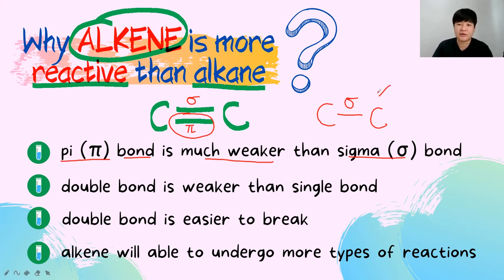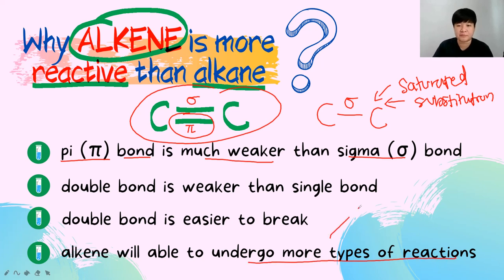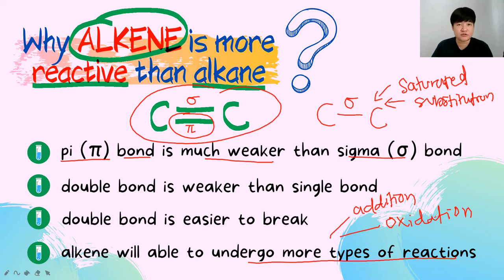Because alkenes are more reactive, they can undergo more types of reactions compared to alkanes. Since alkane has only carbon-carbon single bonds and is already saturated, it can only undergo substitution. But alkenes can undergo addition, oxidation, and more types of reactions due to the presence of the reactive carbon-carbon double bond.